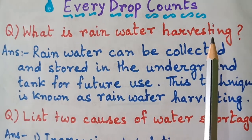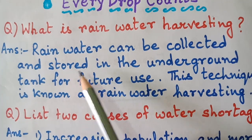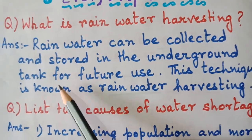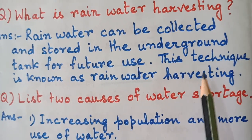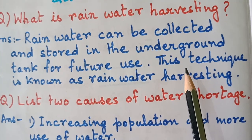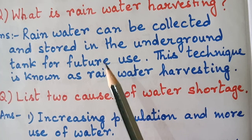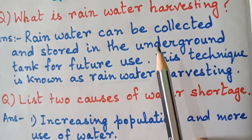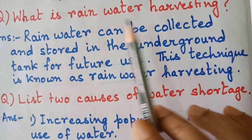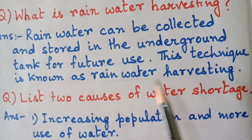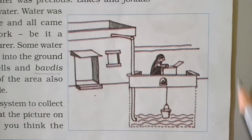My first question: What is rainwater harvesting? Rainwater can be collected and stored in underground tanks for future use. This technique is known as rainwater harvesting. This is the picture of rainwater harvesting.